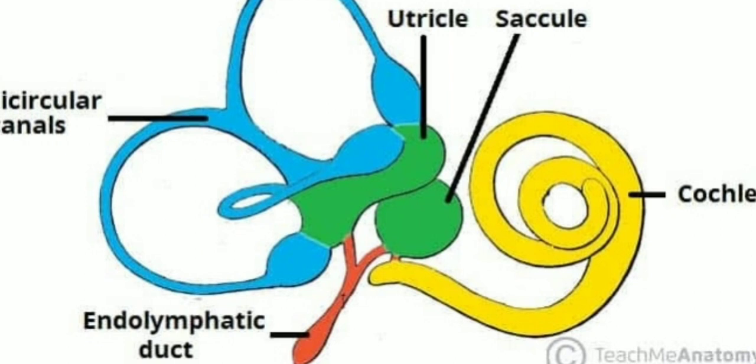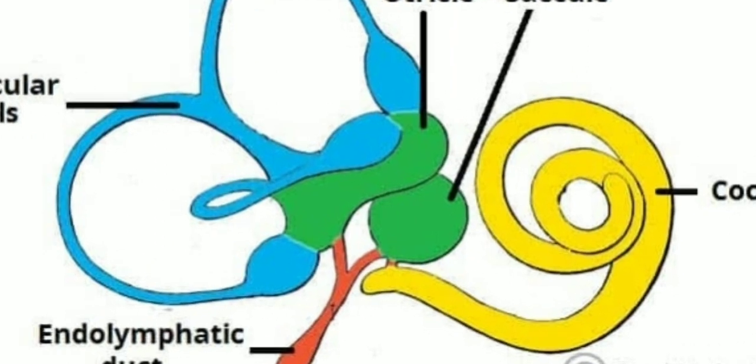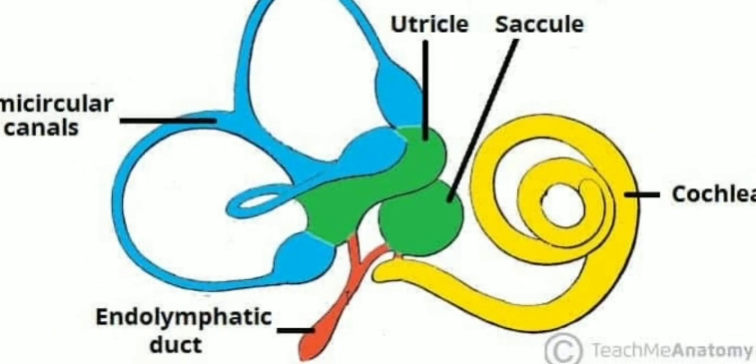Within the vestibule of the inner ear, we have two green-colored balloon-like structures in this picture — one is the saccule and the other is the utricle. The receptor within these structures is the macula.